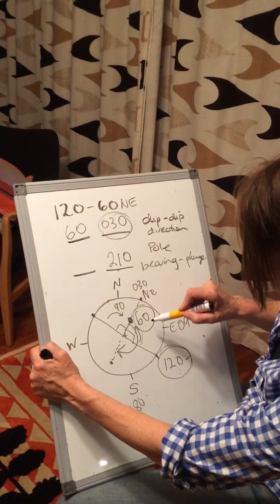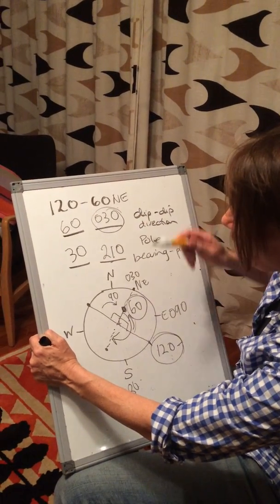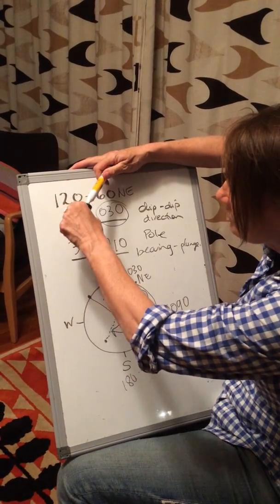Take the dip away from 90 degrees, so 60 minus 90 is 30, and the pole plunges 30 degrees towards 210.